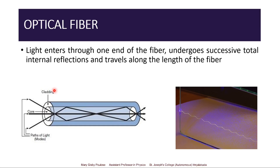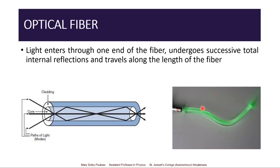In this optical fiber, light enters through one end of the fiber, it undergoes successive total internal reflections, and it travels through the length of the fiber. Here we have this image showing the total internal reflection of laser light through a glass sheet. Light will travel through the path of that optical medium — whatever shape the medium has, light will follow that path.